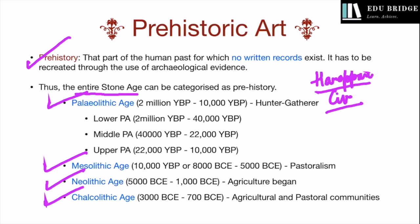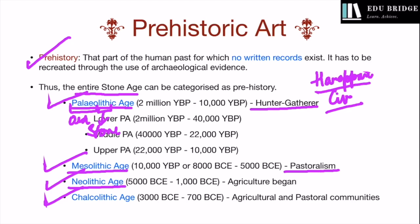The Paleolithic age means the old stone age — the word 'Paleo' in Greek means old, and 'litho' means stone. During this period, men were gatherers and hunters and did not have the knowledge of domesticating animals or of agriculture. During the Mesolithic age, that is the middle stone age, man started domesticating animals and became pastoral nomads. During the Neolithic age, that is the new stone age, agriculture began — in fact, the beginning of agriculture marked the start of the Neolithic age. During the Chalcolithic age, agricultural and pastoral communities sprung up over different parts of the subcontinent.